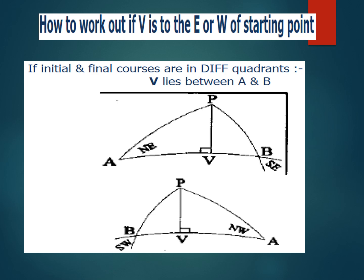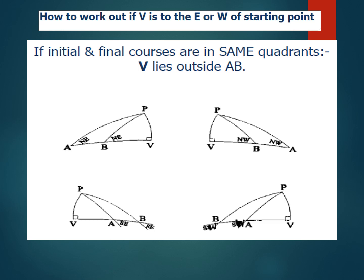In the first figure, the initial course is northeast and the final course is southeast, so the vertex is between A and B. In the next figure, the initial course is northwest and the final course is southwest, so again the vertex is between A and B. When initial and final courses are in the same quadrant — both northeast, northwest, southeast, or southwest — the vertex is outside A and B. But no matter what, the vertex is always drawn towards the higher latitude.